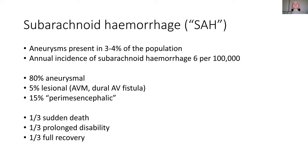Aneurysm and subarachnoid hemorrhage are of particular interest to neurosurgeons because they can be so unforgiving. Aneurysms are actually fairly ubiquitous — 3 to 4% of the population will have an aneurysm, but the annual incidence of subarachnoid hemorrhage is only six per 100,000 per year. 80% of the time it's aneurysmal, 5% is lesional, and 15% is what's called perimesencephalic — around the midbrain — thought to be from venous hypertension. These patients have basically the same re-rupture risk as the rest of the community and tend to recover faster than aneurysmal SAH.